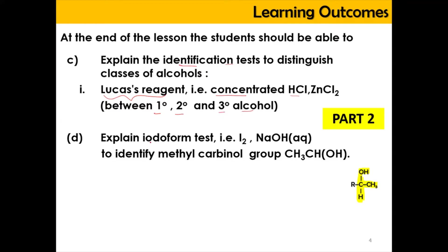Next we're going to do the iodoform test, where the iodoform test is going to use iodine — hence the name 'iodo' — and this is going to happen in the solvent of aqueous sodium hydroxide. This is used to identify the methyl carbonyl group, which has the structure CH3CHOH. When there is this kind of structure, the iodoform test gives a positive result, producing CHI3, which is iodoform.